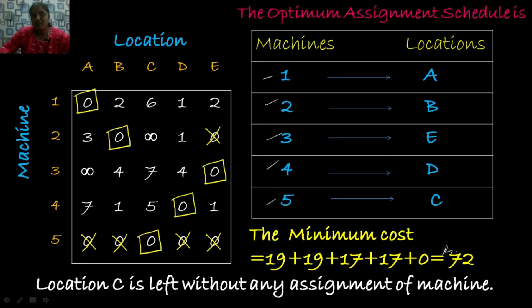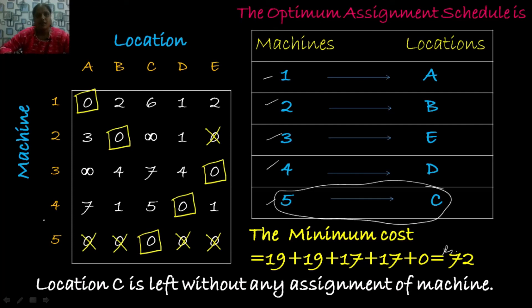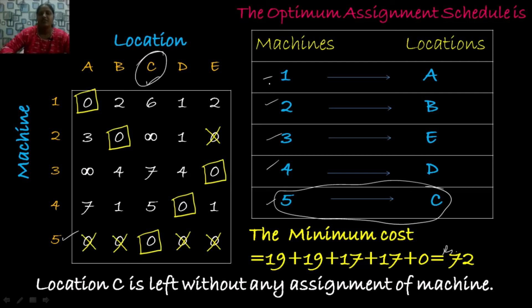The conclusion: dummy machine 5 is assigned to location C, which means location C is left without any real machine assignment — since only 4 machines are available for 5 locations, one location remains vacant. Hope you got a clear idea about how to solve assignment problems with restrictions using the Hungarian assignment algorithm. Thanks for watching — see you in my next video.